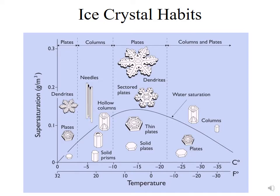Here we introduce the concept of ice crystal habits. Depending upon the temperature and supersaturation combination at which an ice crystal embryo is formed, it will have a different lattice structure and therefore a different outward appearance. On this chart, temperature is on the x-axis and supersaturation is on the y-axis. There is a water saturation curve in the middle of the chart, representing an atmosphere saturated with respect to water — 100% relative humidity. We'll follow that line initially and then discuss what happens when supersaturation exceeds the water saturation value.